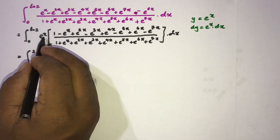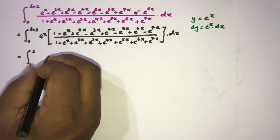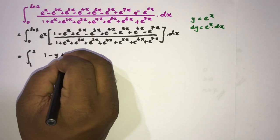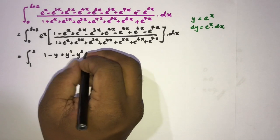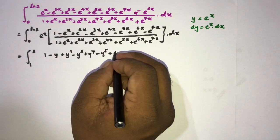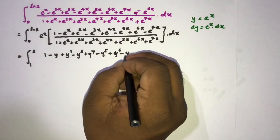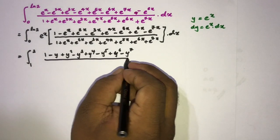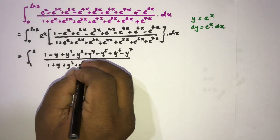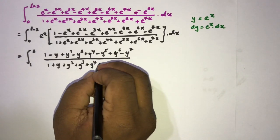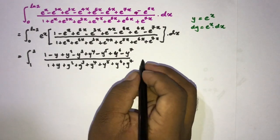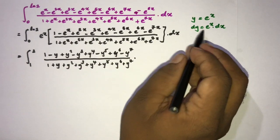Since e to the x dx equals dy, the integral from 1 to 2 becomes: the numerator is 1 minus y plus y squared minus y cubed plus y to the 4th minus y to the 7th, and the denominator is 1 plus y plus y squared plus y cubed plus y to the 4th plus y to the 5th plus y to the 6th plus y to the 7th, times dy.